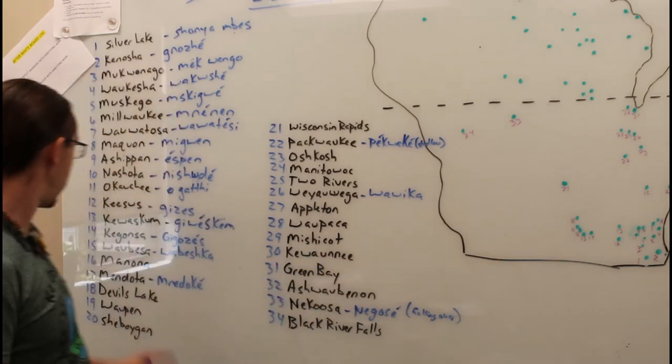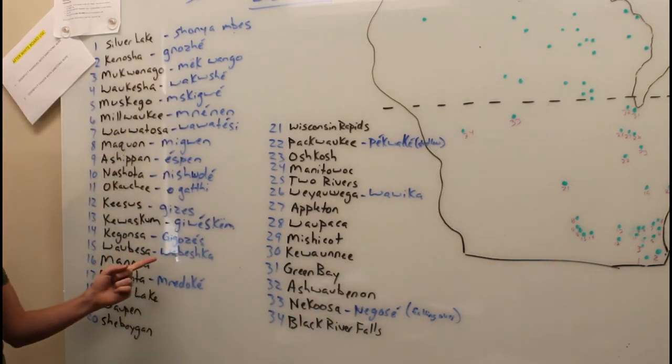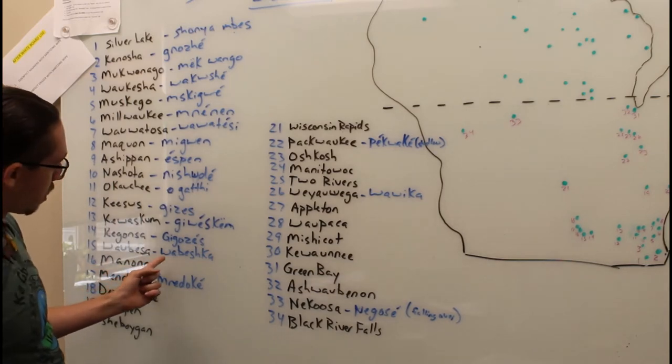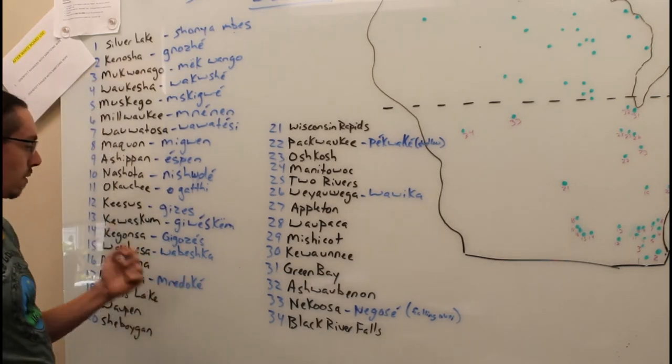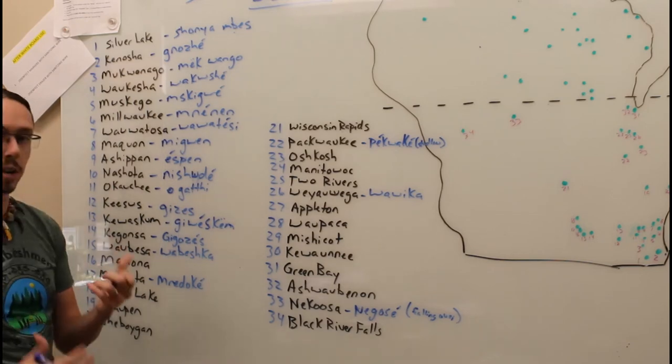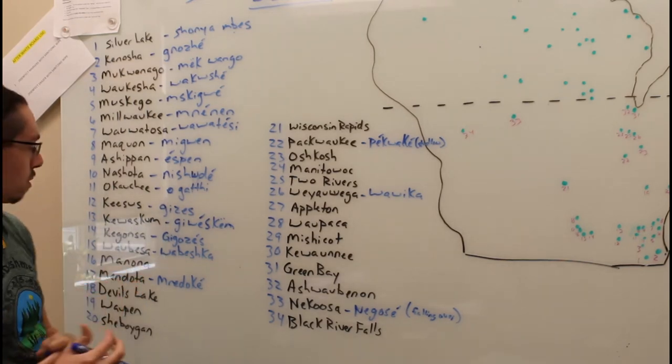Right next to there, you have Waubesa, Wisconsin, which comes from our word Wabishka. And that refers to white foam, like on the water.